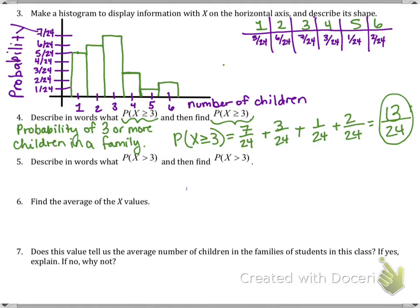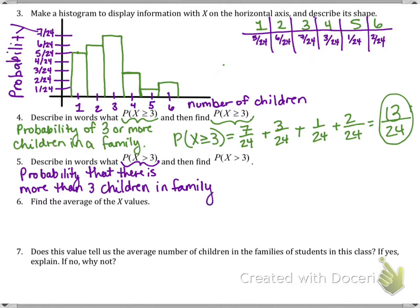However, in words what does this mean when there is no equal to symbol? This is the probability that a family has more than three only. Now this time we don't count the three.